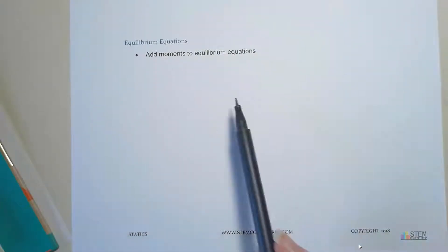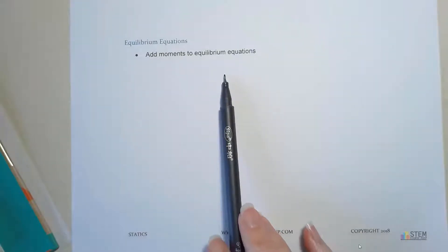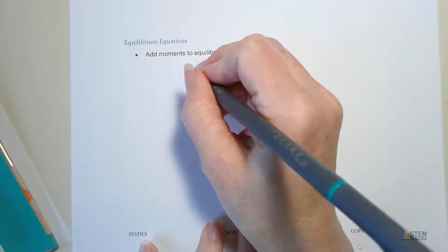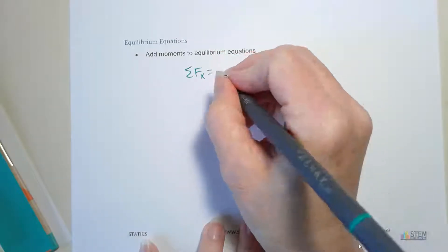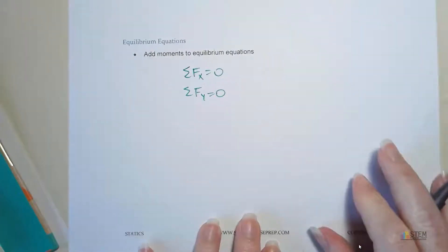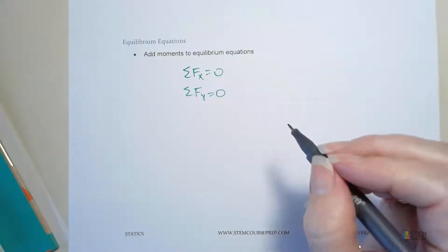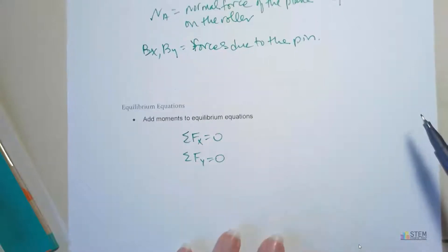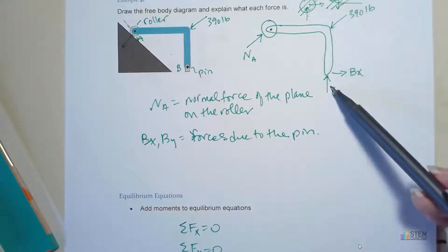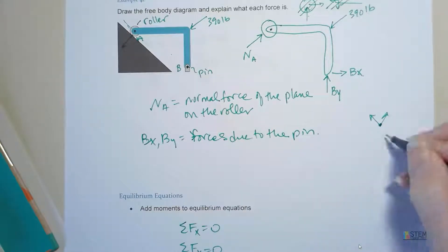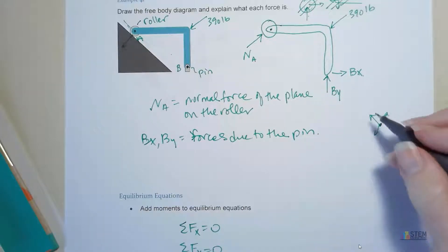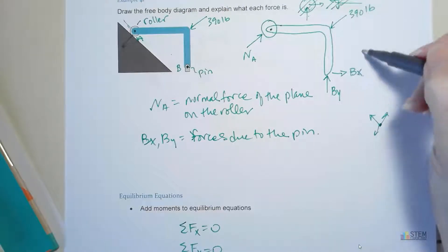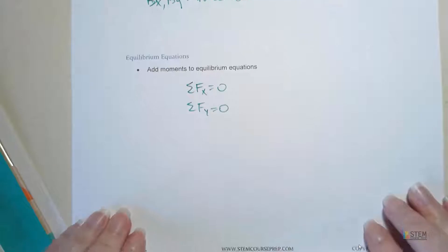We discussed free body diagrams. Now let's go over our equilibrium equations that we're going to use when dealing with rigid bodies. We still have the sum of the forces in the x direction equal to zero, and the sum of the forces in the y direction equal to zero. We used those equilibrium equations before when talking about particles. Now that we have rigid bodies, we're looking at bigger systems with forces at distances between various points, so these are going to create moments. That means we have to add moments to our equilibrium equations.